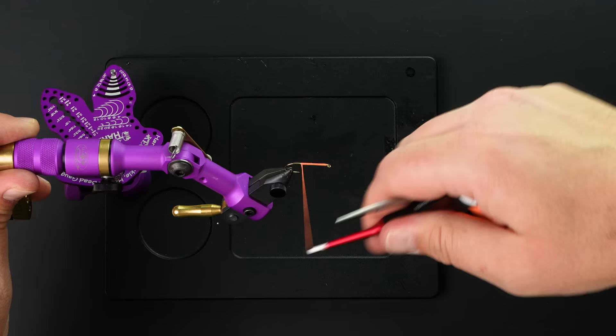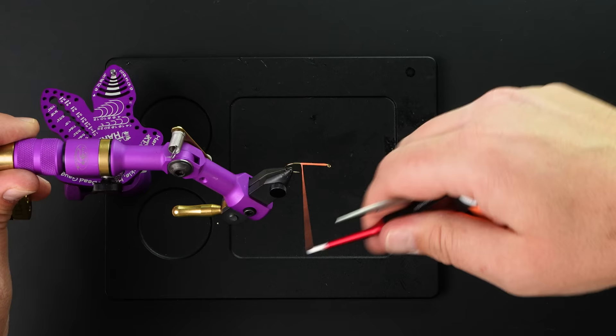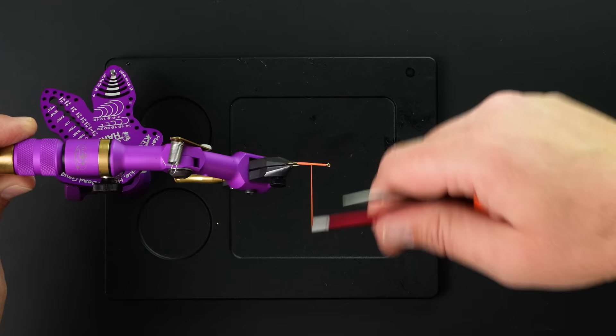So keep your thread relatively short. Doesn't have to be super short. And just practice wrapping down and back up using touching turns. And if you have your bobbin parallel to the hook, it makes it infinitely easier. Those little tips will help you tie more clean flies.